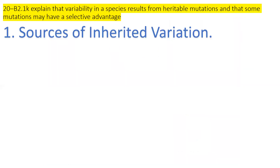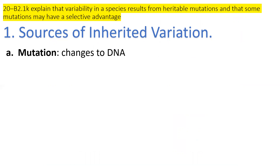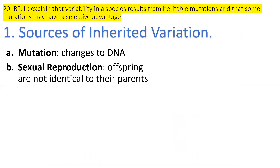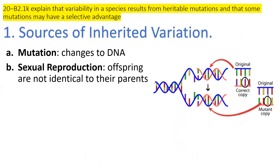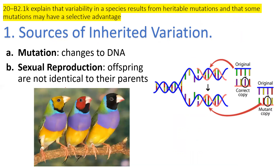This week we want to ask ourselves, what are the sources of variation originally? What caused the sources of variation in the original population? There are two sources: mutations and sexual reproduction. We want to look at both of these.